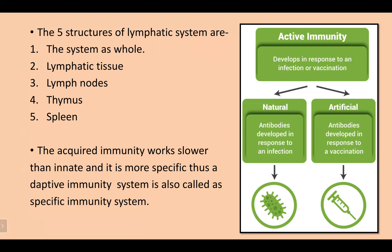The acquired immunity works slower than innate immunity and it is more specific. Thus the adaptive immunity system is also called the specific immune system. Antibodies develop in response to an infection, while artificial antibodies develop in response to a vaccination.